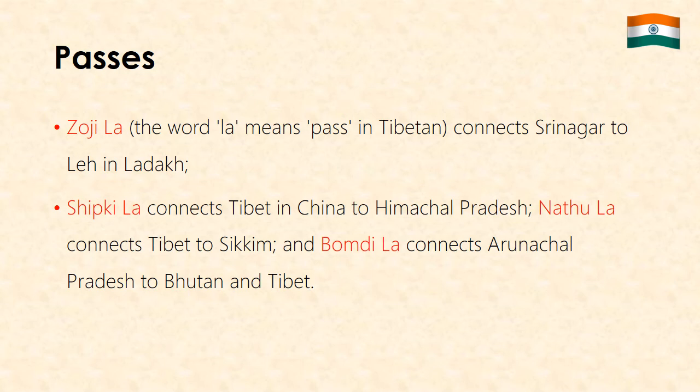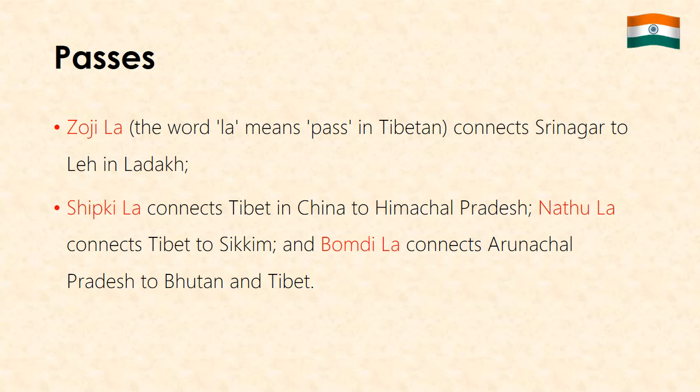Passes: There are many passes in the Himalayan ranges which enable people to travel and carry on trade across the northern mountains. Though these passes are at high altitude and remain snow-covered most of the year, they are often the only means of communication across these towering ranges. Zoji La (the word 'la' means pass in Tibetan) connects Srinagar to Leh in Ladakh. Shipki La connects Tibet to Himachal Pradesh. Nathu La connects Tibet to Sikkim, and Bomdi La connects Arunachal Pradesh to Bhutan and Tibet.